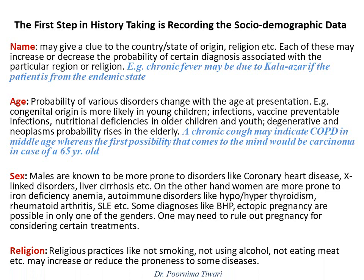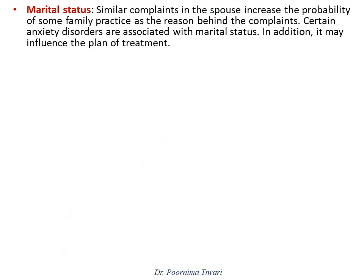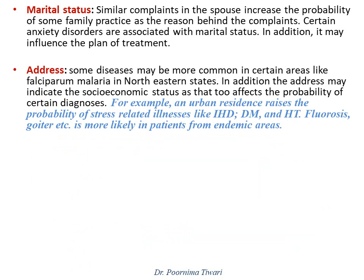Religion, religious practices, and marital status are also relevant. Similar complaints in the spouse may increase the possibility that the disorder has an origin in a shared family practice. Certain anxiety disorders may be associated with marital status, and marital status also has a bearing on the treatment plan. Regarding address, some diseases may be more common in certain areas — for example, urban residence raises the probability of stress-related illnesses like coronary heart disease, diabetes mellitus, and hypertension, while fluorosis and goiter may be more likely in patients from endemic areas.